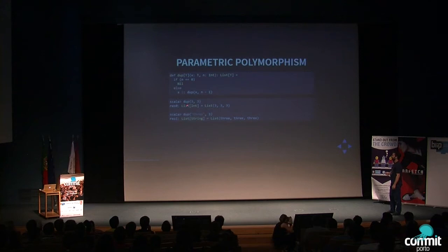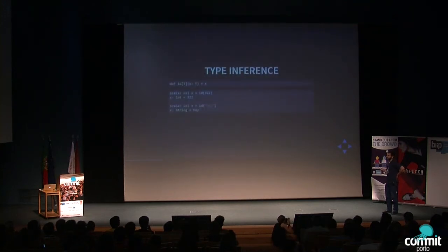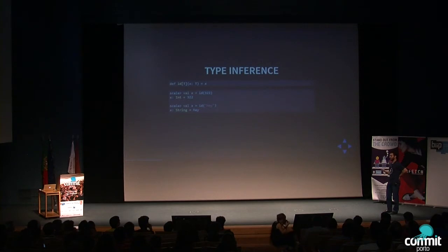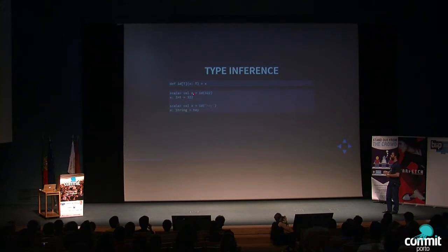In the REPL, I called the dup function with an integer and a string. Notice I didn't specify the type parameter in either call, and the return value is correct. This is because Scala has type inference — you don't need to explicitly declare types the compiler can infer for you. For instance, in this identity function I don't specify the return type because it's obviously going to be of type T. Likewise, when assigning a function call's result to a variable, you don't need to declare the variable's type.